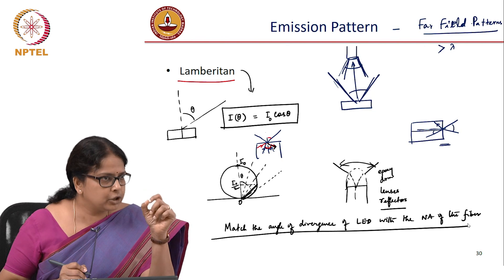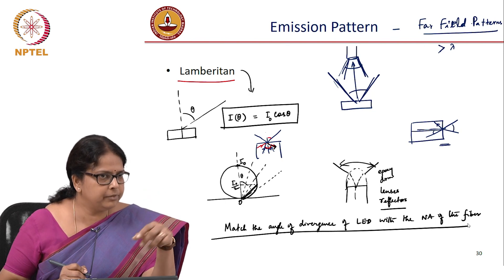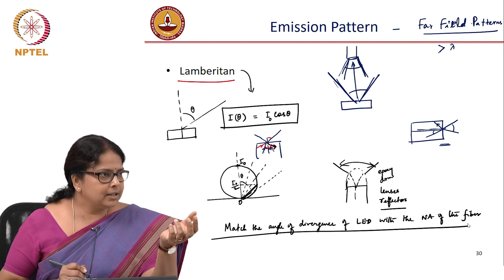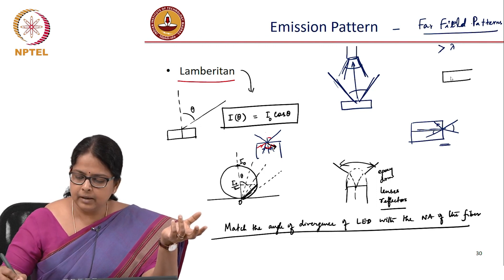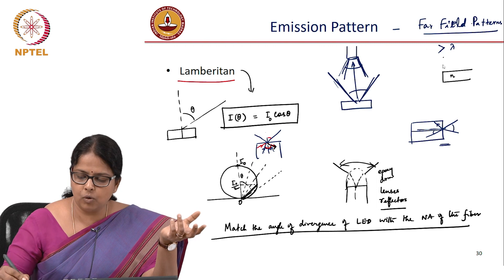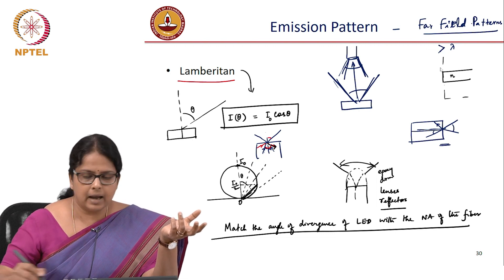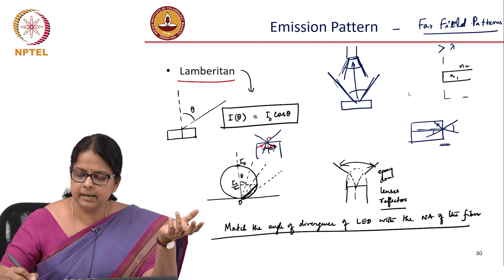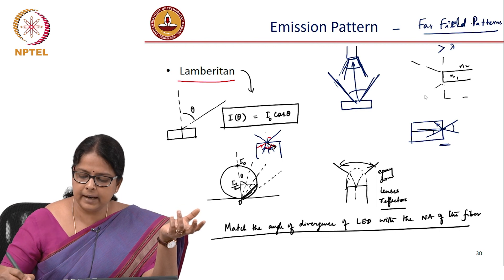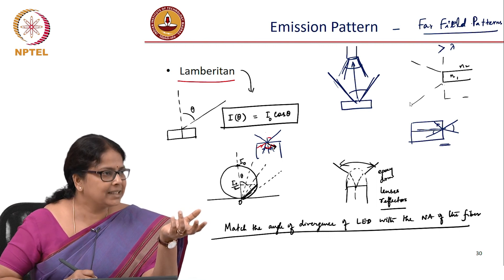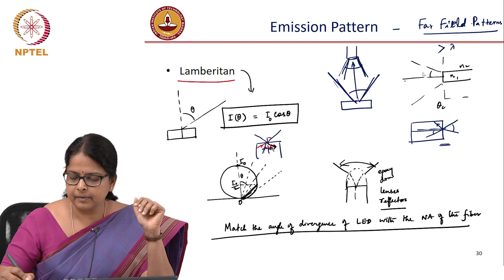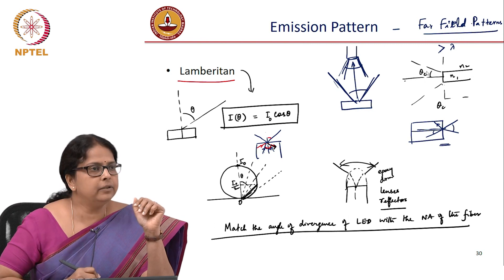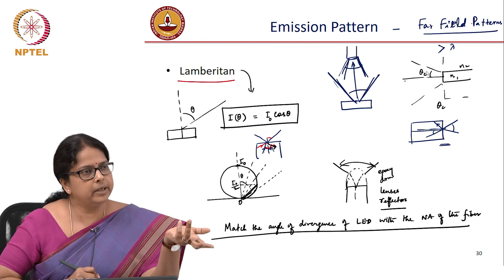We will talk about what a numerical aperture of a fiber when we talk about fibers, but from your elementary class 12 understanding, you know that every optical fiber depending on the refractive index of the core and the refractive index of the cladding can accept only light at specific angles and that is your acceptance angle and sine of that acceptance angle is your numerical aperture.